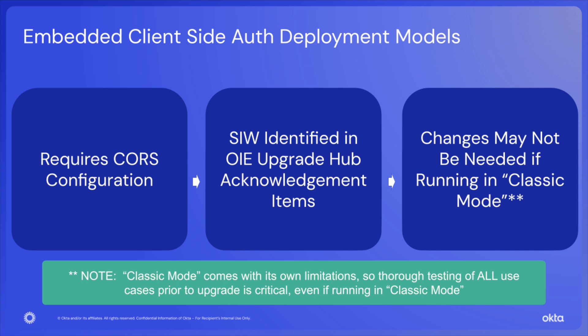Embedded authentication using client-side code is also fairly easy to identify within your environment. If you have an embedded flow that uses the sign-in widget, this will be called out as an acknowledgement item in your OIE upgrade hub. For both the widget and the JavaScript auth.js flows, CORS must be configured within your Okta tenant in order for these to function. It's also important to note that changes may not be necessary for the upgrade if you're running the widget in classic mode, though classic mode does come with its own set of limitations, so thorough testing is still critical.